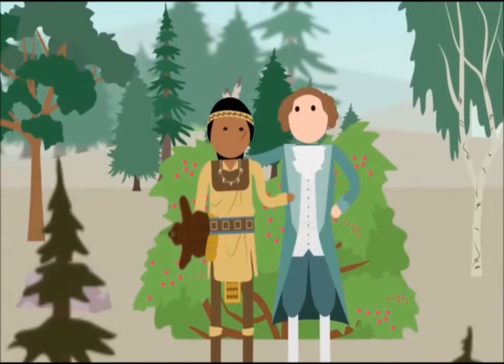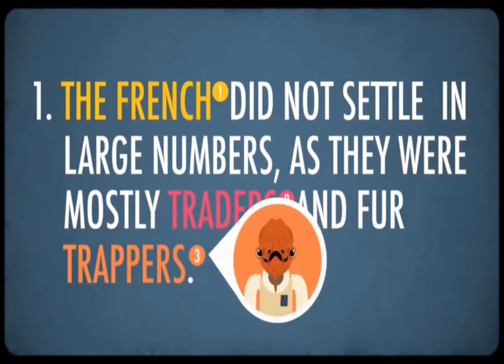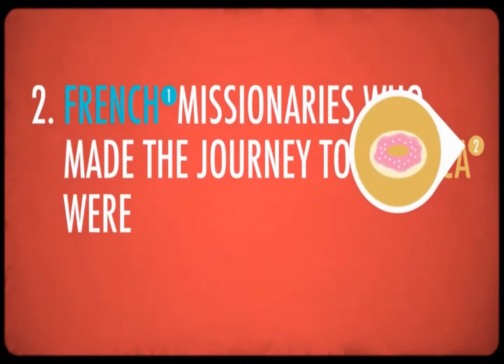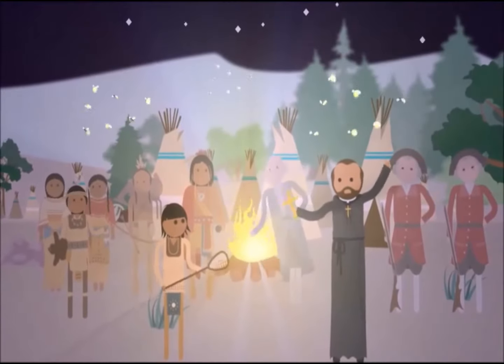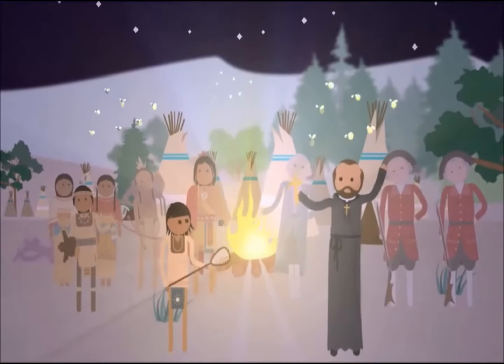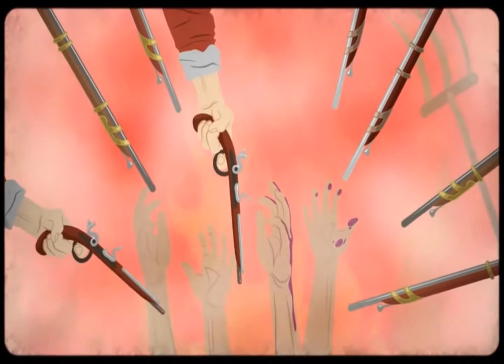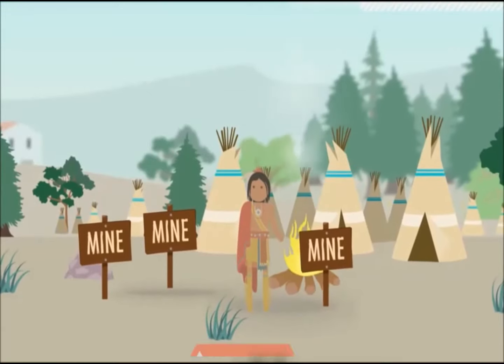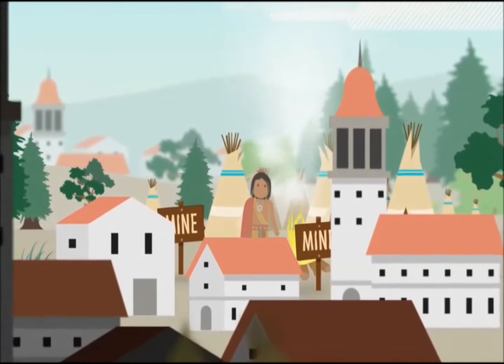The French, and especially the English, just assumed that the Indians weren't improving the land, which meant they didn't own the land, so it was okay for Europeans to take it — which, as you might imagine, was problematic for the Indians. Indian tribes initially got along better with the French than with the Dutch or English because the French did not settle in large numbers — they were mostly traders and fur trappers — and French missionaries who came to the Americas were Catholic Jesuits who learned Indian languages and tried to make Catholicism more amenable to Indian religion. The end result of the war, a greatly reduced French presence on the American mainland, meant that Indians could no longer easily play the British and French off each other, which opened the floodgates of British settlers. In the end, the American Indians were perhaps the biggest losers of the Seven Years' War.